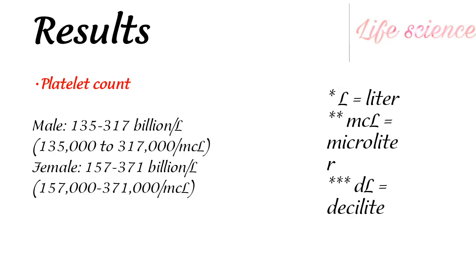Platelet count for males is 135 to 317 thousand cells per microliter, and for females 157 to 317 thousand cells per microliter. The units used are: L for liters, mcL for microliters, and dL for deciliters. These are the reference values for the complete blood count.